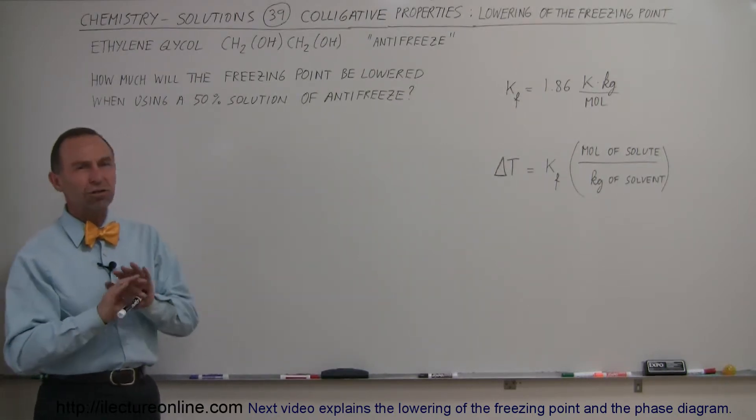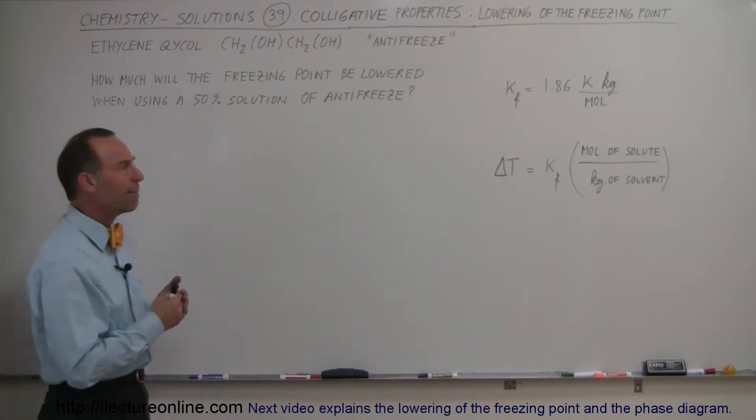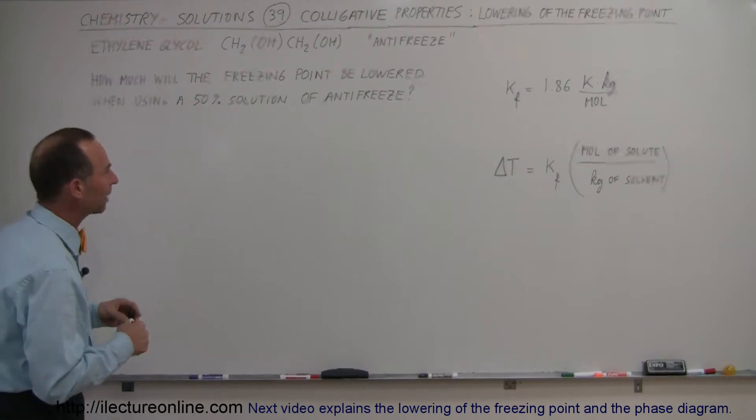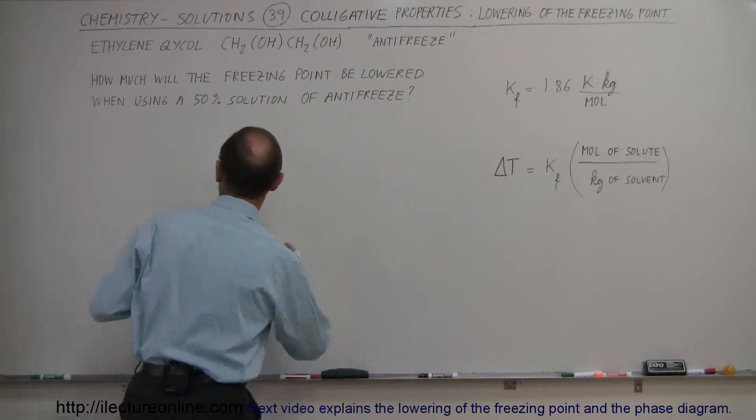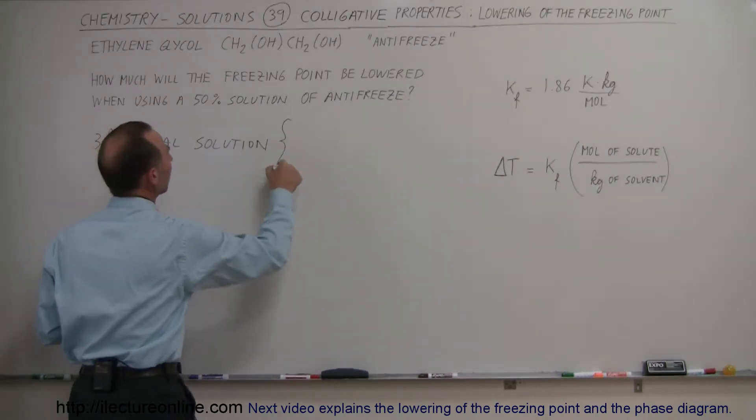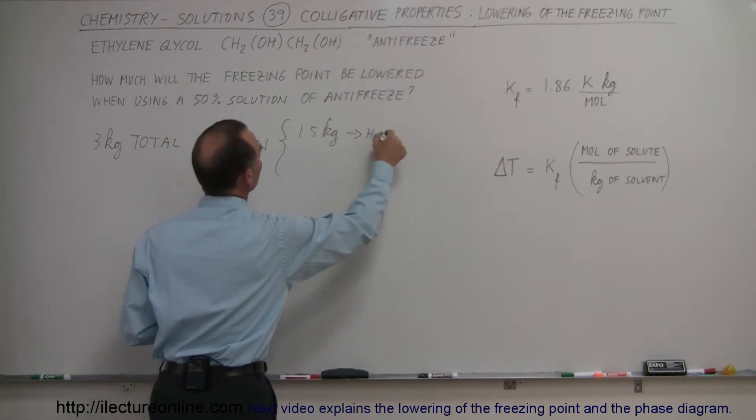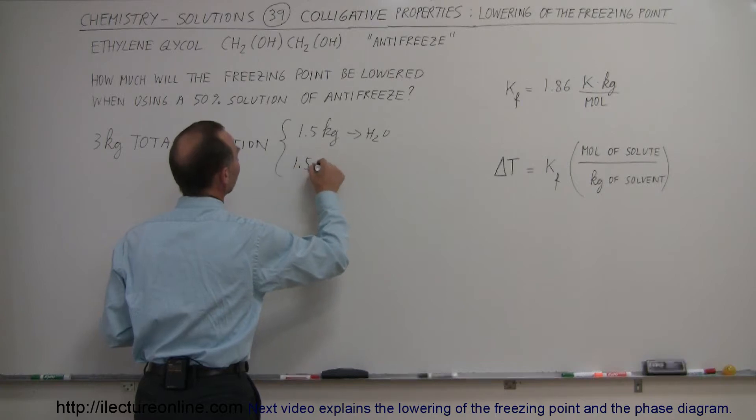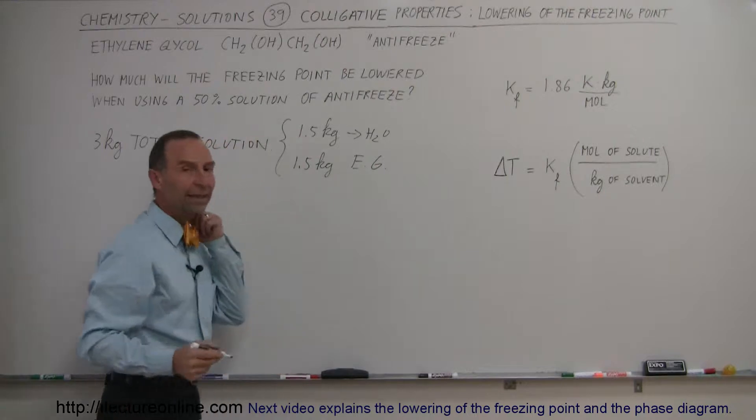Let's go ahead and round it off to make it a little bit easier. Let's say it's about 55% mass-to-mass ratio. If we do that, let's say we want to make 3 kilograms of a water-antifreeze solution. So we have 3 kilograms total solution, which means out of the 3 kilograms, about 1.5 kilograms is water and about 1.5 kilograms is ethylene glycol.